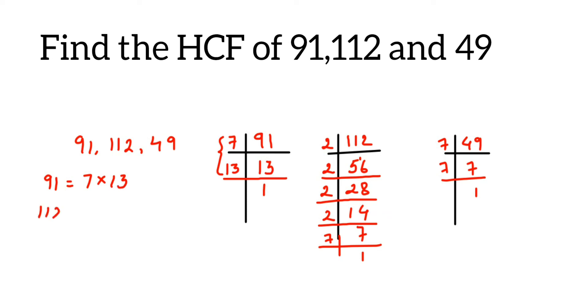112 equals 2 times 2 times 2 times 2 times 7. And 49 equals 7 times 7.